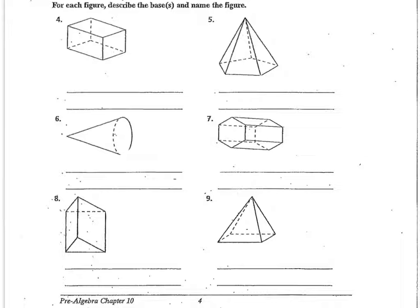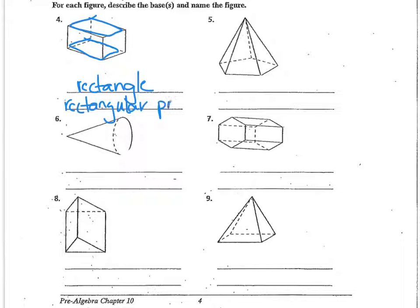Naming some of these figures — for each figure, describe the base and name the figure. So we're going to trace the base. The base here is a rectangle. To name the figure, you take the name of the base — so this is a rectangular — and then decide if it's a prism or a pyramid. This one has two parallel bases, so this is a rectangular prism. And you can see the remaining faces around the outside are rectangles.